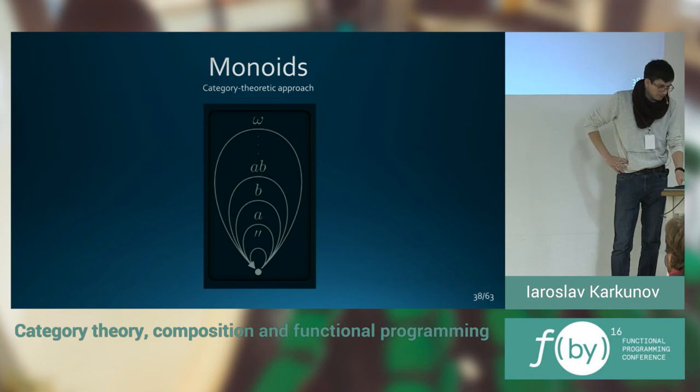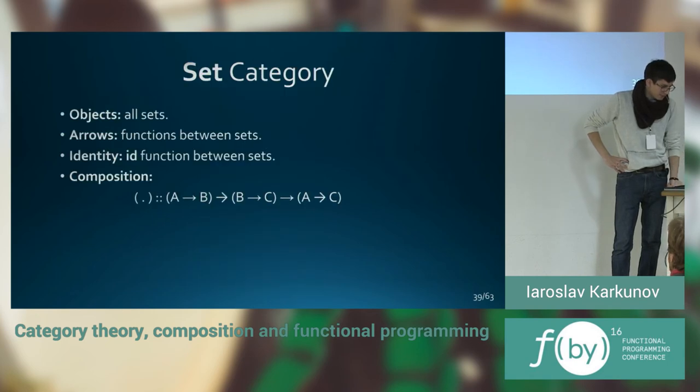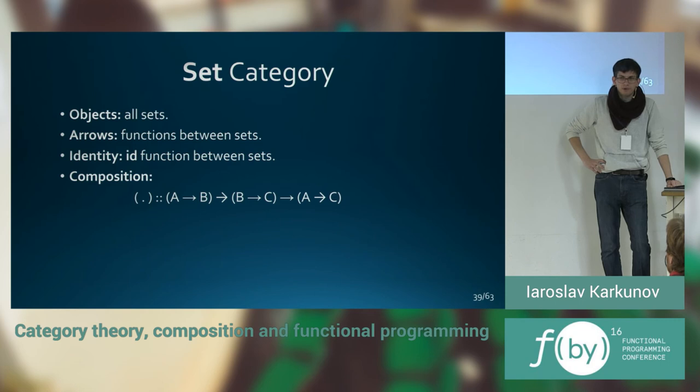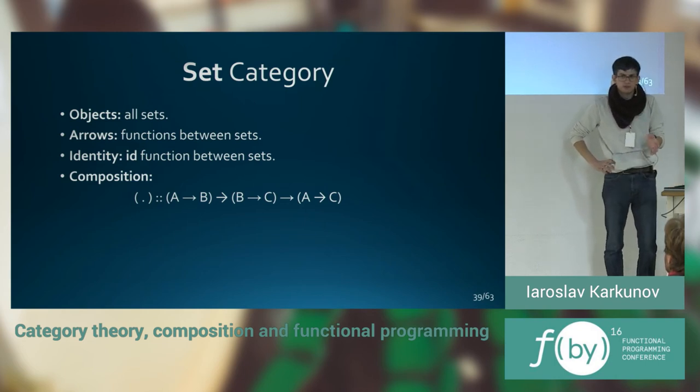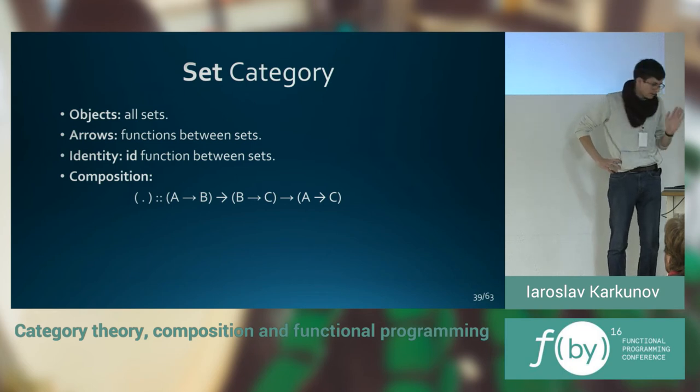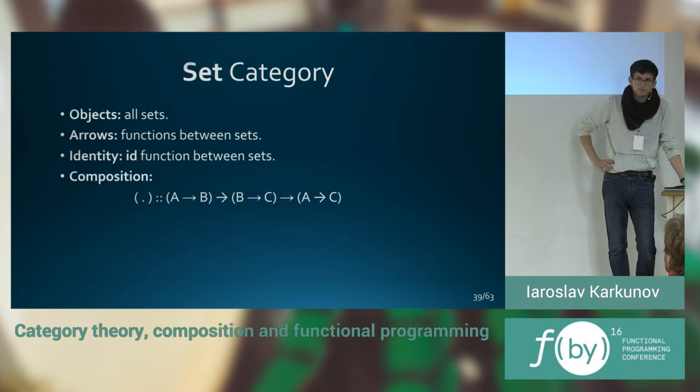Now, maybe even more interesting example. Set category. Category of all of the sets. Objects are all of the sets. And arrows are functions between those sets. Identity is ID function, which does nothing. It just maps X inside set to the X. And composition is just a regular composition of functions. That satisfies everything we need to form a category.